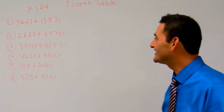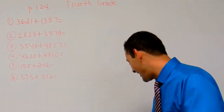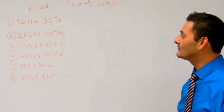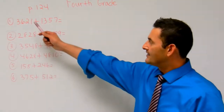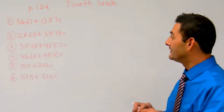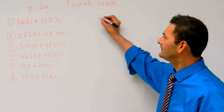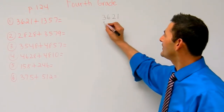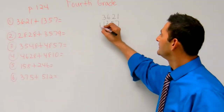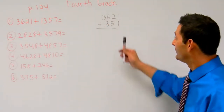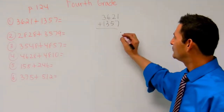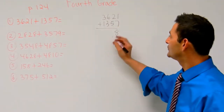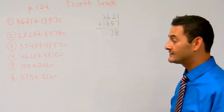Let's go ahead and get started doing the standard algorithms indicated here. So let's add these numbers together. Here we've got 3,621 plus 1,357. I'm going to go ahead and rewrite it and add. 1's place: 7 plus 1, that's 8 1's. 10's place: 5 plus 2, that's 7 10's.